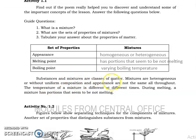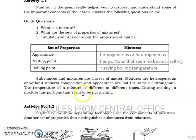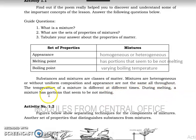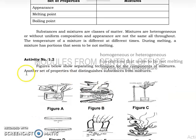Substances and mixtures are classes of matter. Mixtures are heterogeneous, or without uniform composition — appearance is not the same all throughout. The temperature of a mixture is different at different times during melting, and a mixture has portions that seem to be not melting.